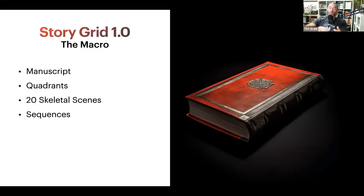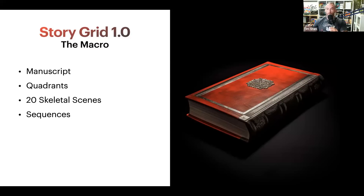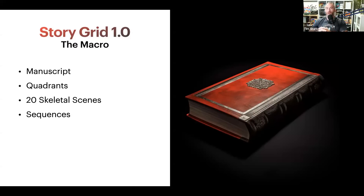StoryGrid 1.0 is really focused on the macro of your story — the manuscript level, the four quadrants, the 20 skeletal scenes and sequences in your novel. It's that big macro overarching storytelling. This is where Sean spent most of his time as a professional editor at major publishing houses. By the time a book hit his desk, writers kind of knew what they were doing — the line-by-line was working. They were dealing with problems at the macro level, and that's what went into all his thoughts on genre, the five commandments, and everything inside the StoryGrid.